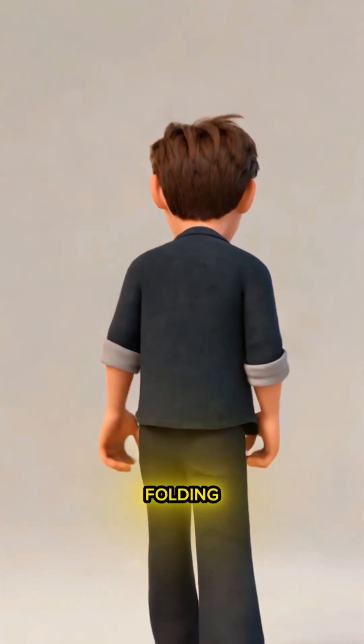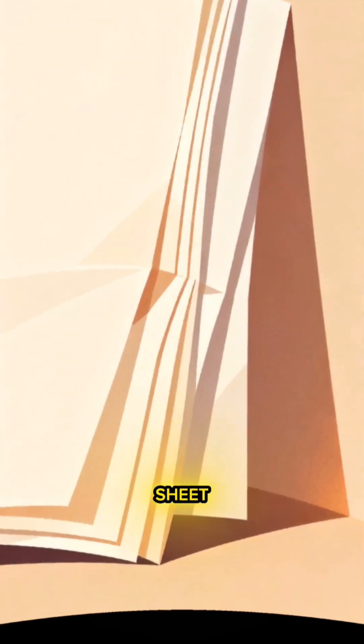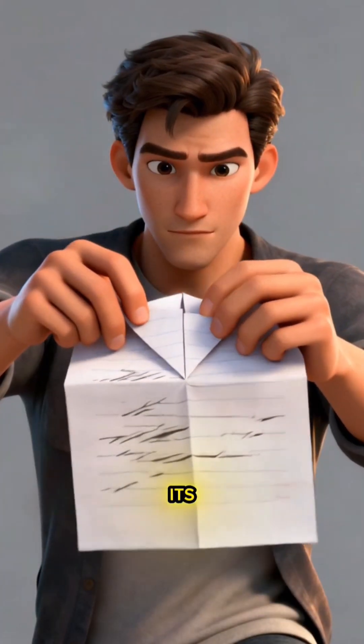You won't believe what happens when you try folding paper more than 7 folds. Physics literally gives up. A normal sheet is about 0.1 mm thick. Each fold doubles its thickness.